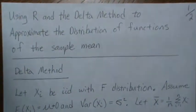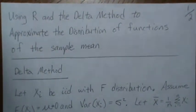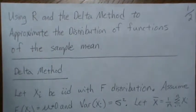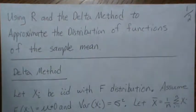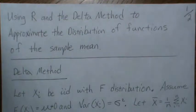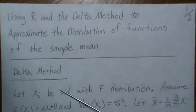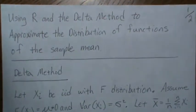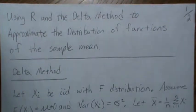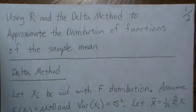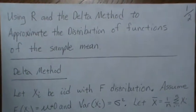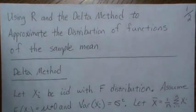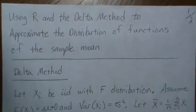In this video we're going to use R and the delta method to approximate distributions of functions of the sample mean. For instance, what's the distribution of the sample mean? What's the distribution of the square root of the sample mean? What's the distribution of the sample mean squared, etc.? On paper we're going to use the delta method to show what the method indicates should be the approximate distribution. Then we're going to go into R and simulate this and see how close the simulated results are with the theoretical results. So let's jump right in.